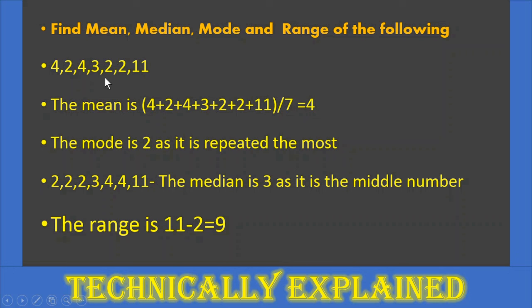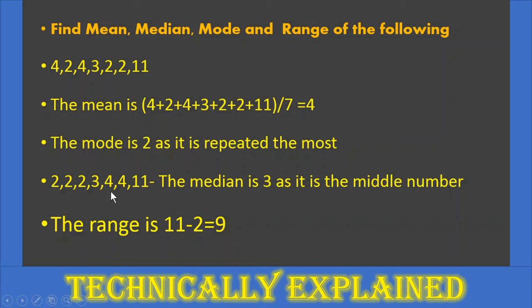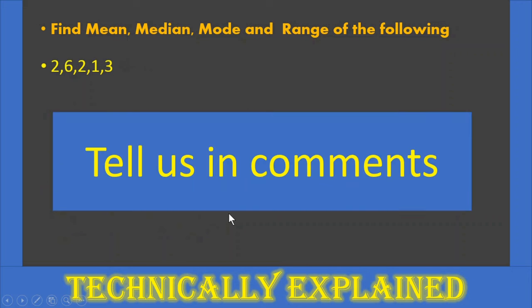اس sequence میں most repeated element کونسا ہے؟ جو most repeated element ہے وہ 2 ہے — تو mode ہمارے پاس 2 ہے۔ Median نکالنے کے لئے پہلے sequence کو ascending order میں arrange کیا۔ 7 elements ہیں (odd) تو middle element fourth position پہ ہے — تو median ہمارے پاس 3 ہے۔ Range: largest is 11، smallest is 2، تو 11 − 2 = 9۔ Range ہمارے پاس 9 آ گئی۔